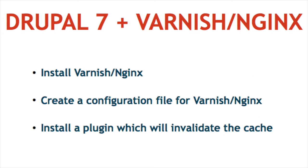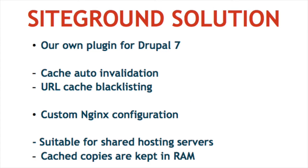In Drupal 7, to handle full page caching through a reverse proxy you need to do three things: install either Varnish or Nginx, create a configuration file for it, and install a plugin or similar solution to integrate cache invalidation into Drupal. On our servers we have a solution called SuperCache — a plugin that works for Drupal 6 and 7, provides cache invalidation, and lets you blacklist certain URLs to exclude from caching. We also have custom Nginx configuration, which I'll show you now.